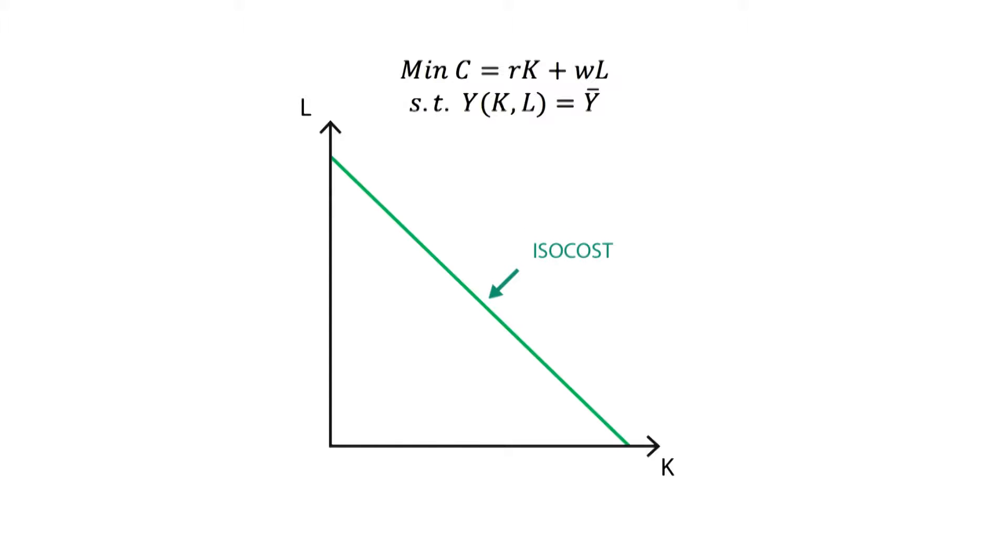This is called an isocost line, which represents the budgetary constraint the firm is faced with. It joins different input combinations that have the same cost. In theory, any combination that lies inside or on this isocost line can be chosen.